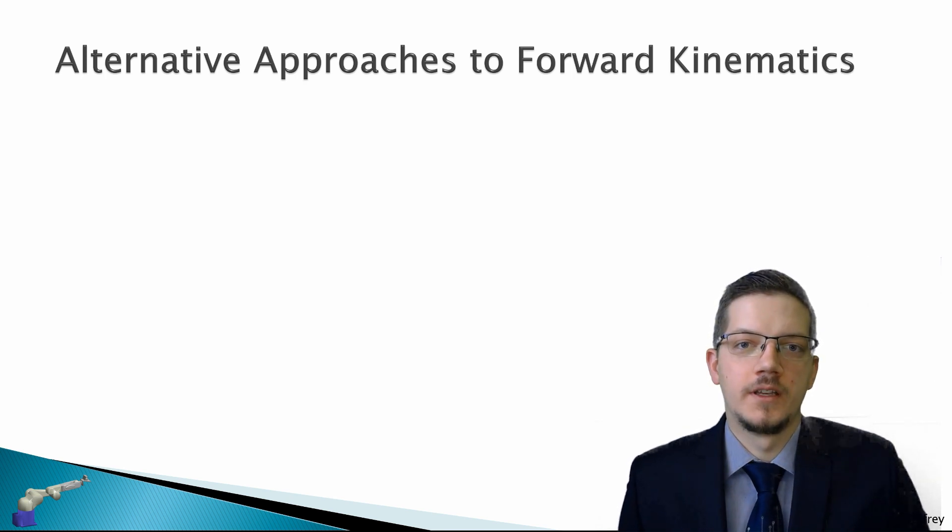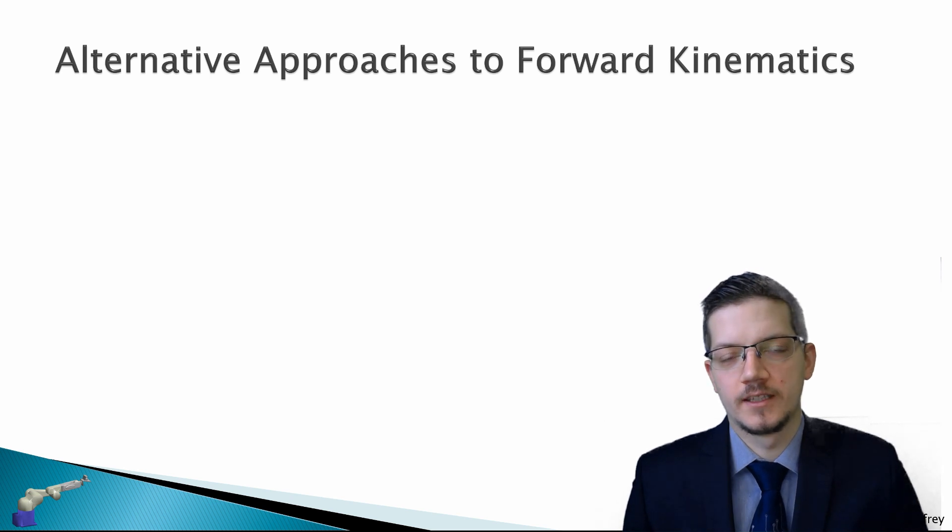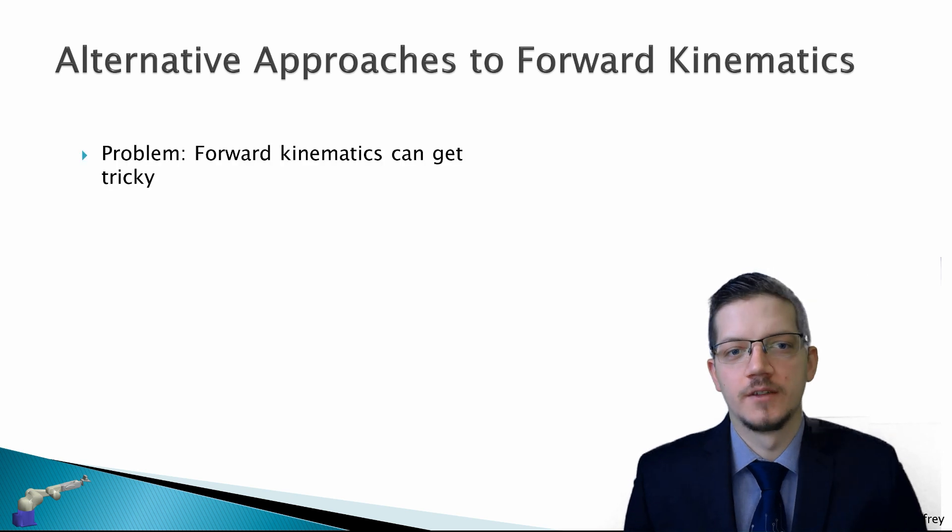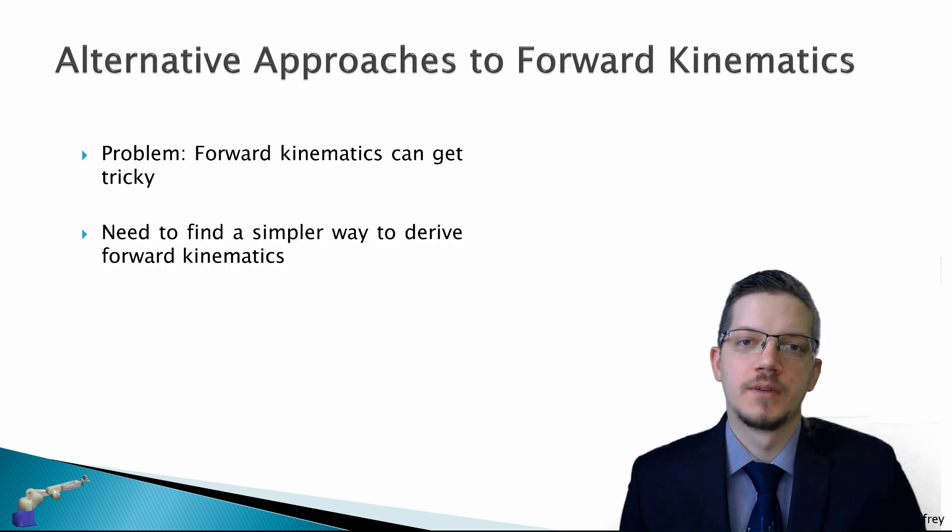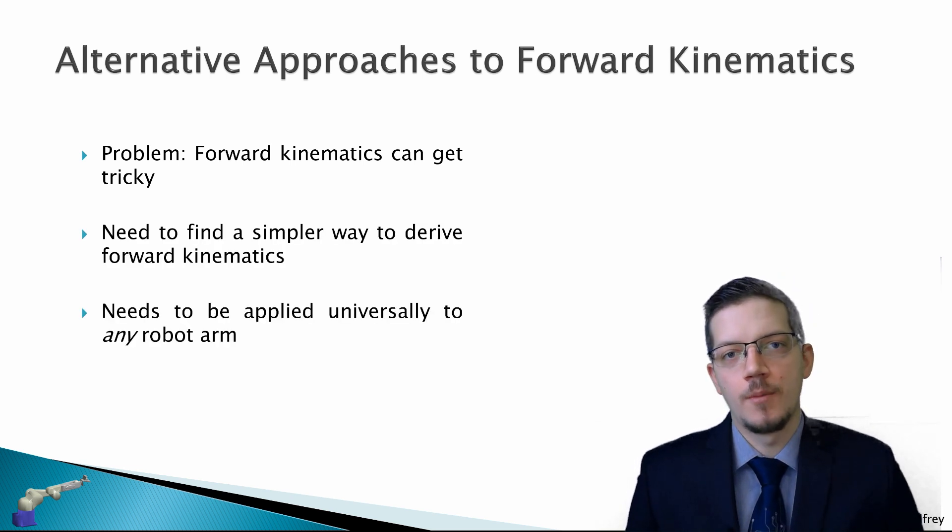Right, so we saw that the 2D planar robot was really simple forward kinematics. But once we expanded to a 3DOF robot in three dimensions, it started to get very tricky. So the problem is that forward kinematics can be very difficult for complex robot structures. And what we want to do is find a simpler way to derive the forward kinematics. And on top of this, it needs to be applied universally to any sort of serial link manipulator.